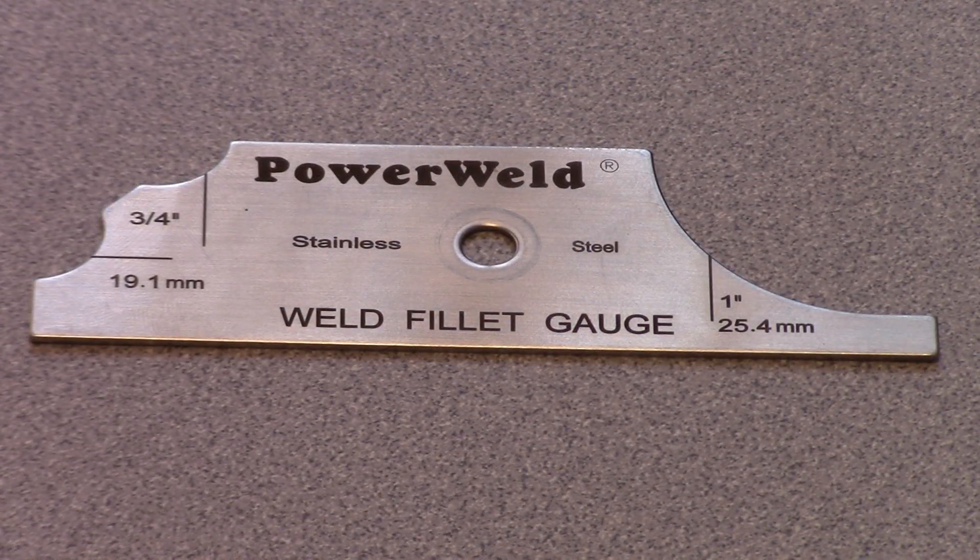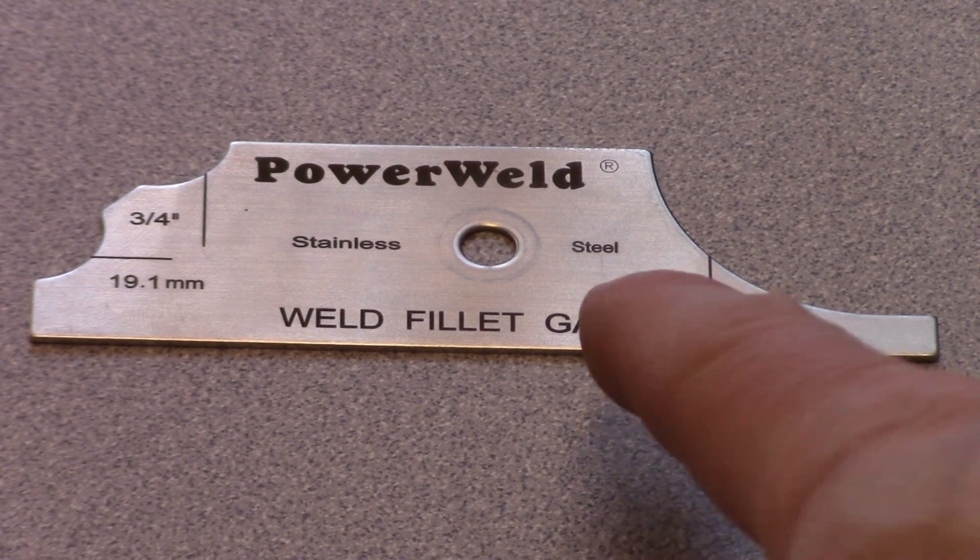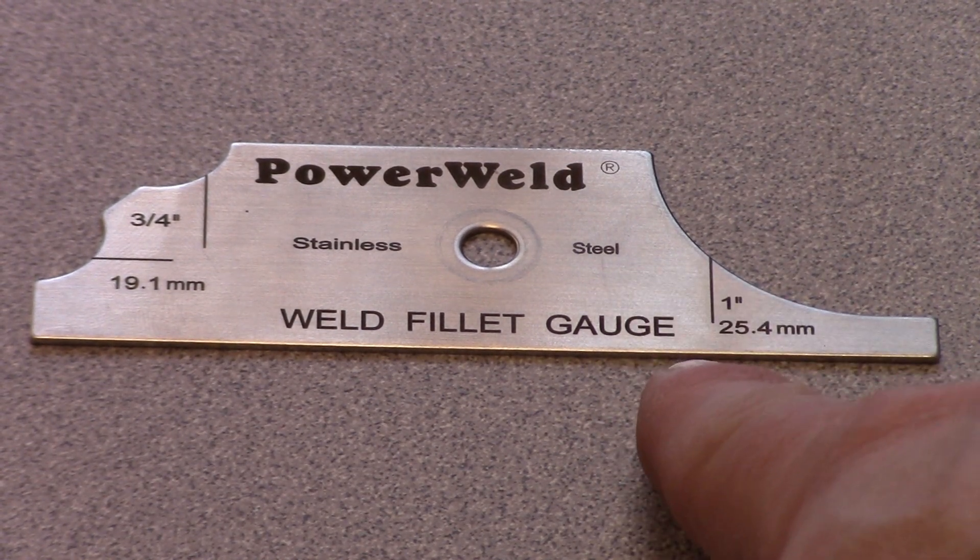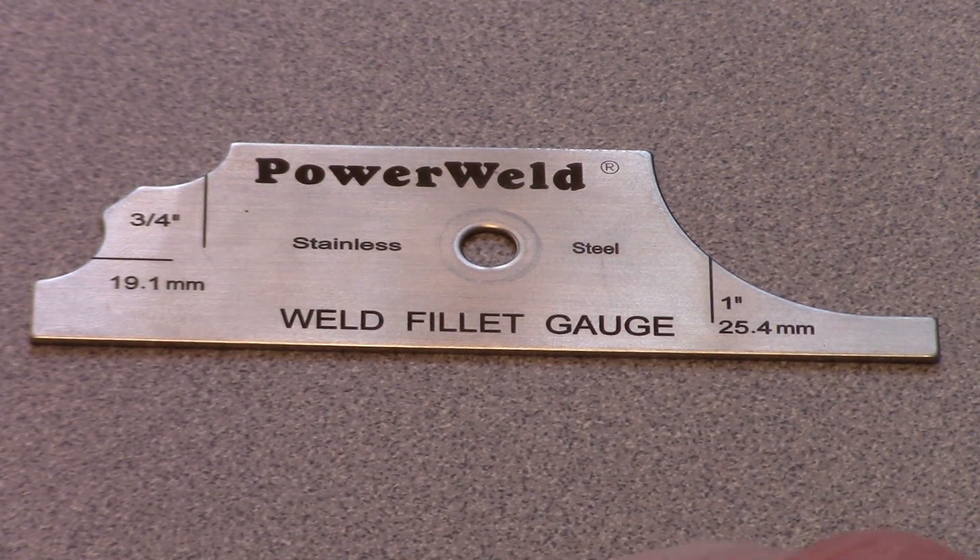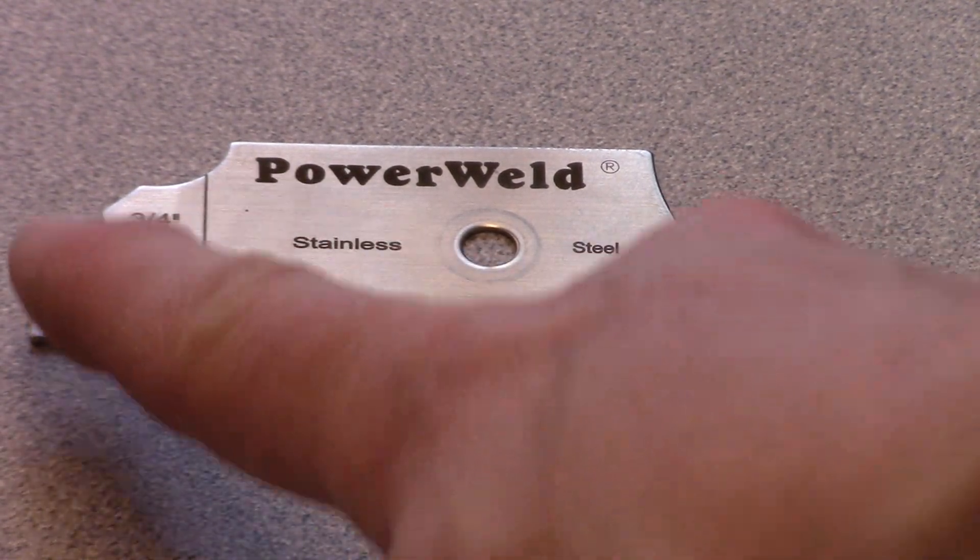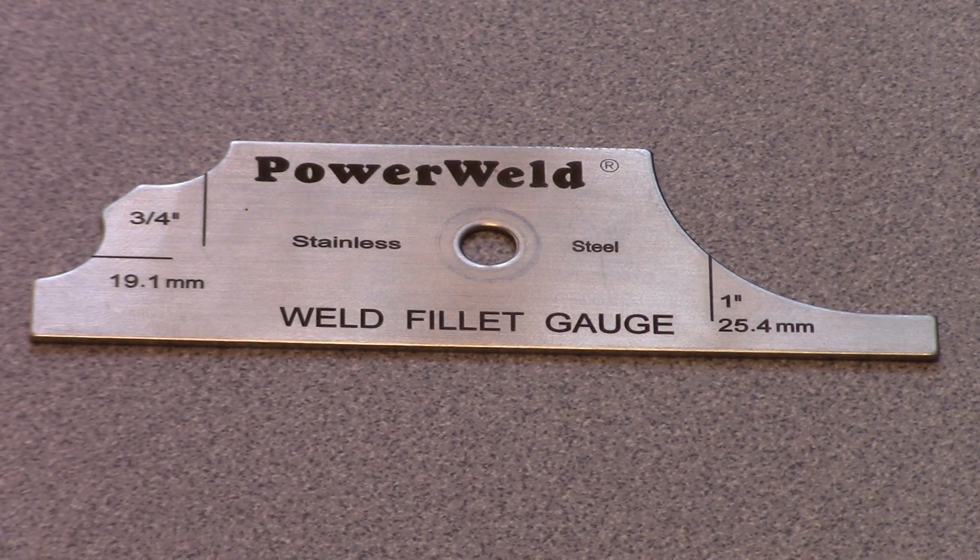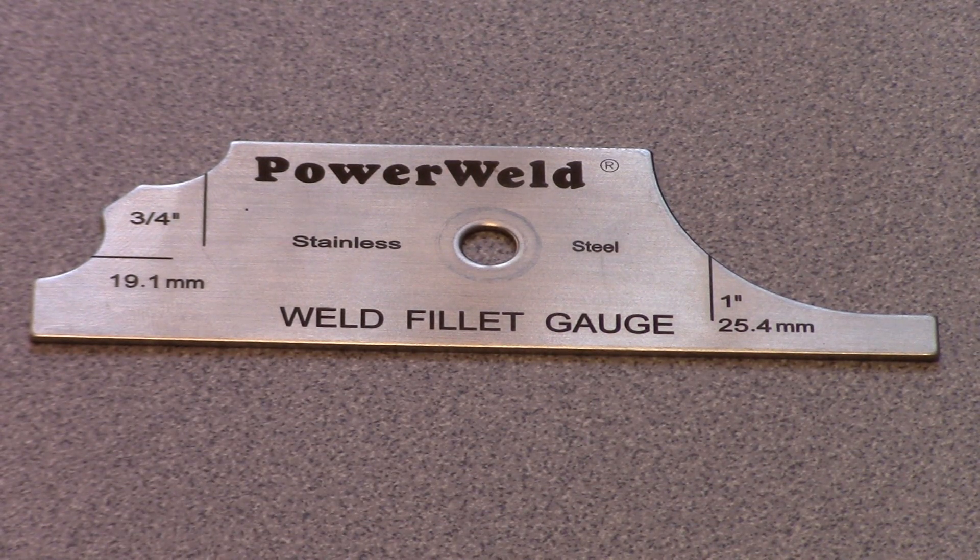Alright this is a close up of the one I was holding when I was up at the board. And you can see there's the line for a one inch fillet weld. That's a big weld. There's your concavity checker there. Three quarters of an inch. Leg size would be that line and that line. Alright let's take a look at the T joint we did.